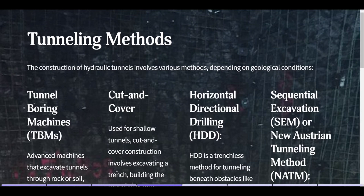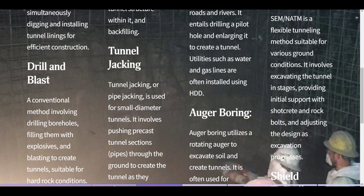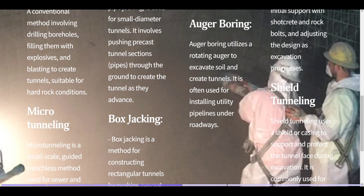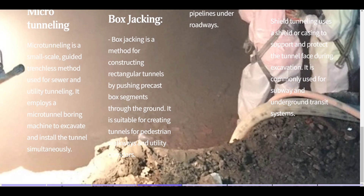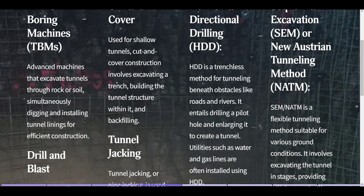Cut and Cover involves excavating a trench, building the tunnel structure within it, and backfilling, used for shallow tunnels. Tunnel jacking, or pipe jacking, pushes precast tunnel sections through the ground for small-diameter tunnels. Box jacking constructs rectangular tunnels by pushing precast box segments through the ground, suitable for pedestrian walkways and utility corridors. Horizontal Directional Drilling (HDD) is a trenchless method for tunneling beneath obstacles like roads and rivers, often used for installing water and gas lines.